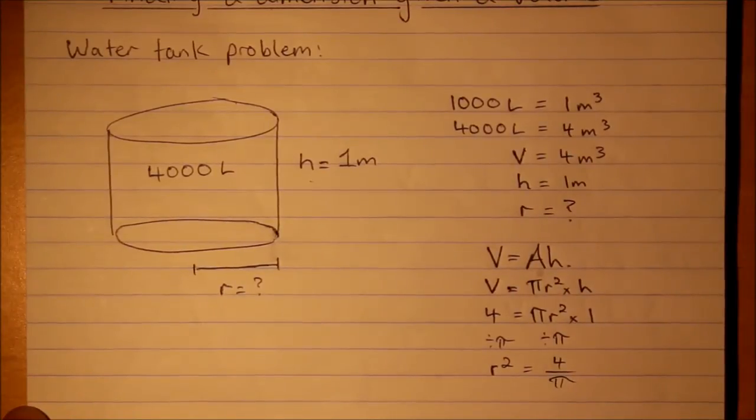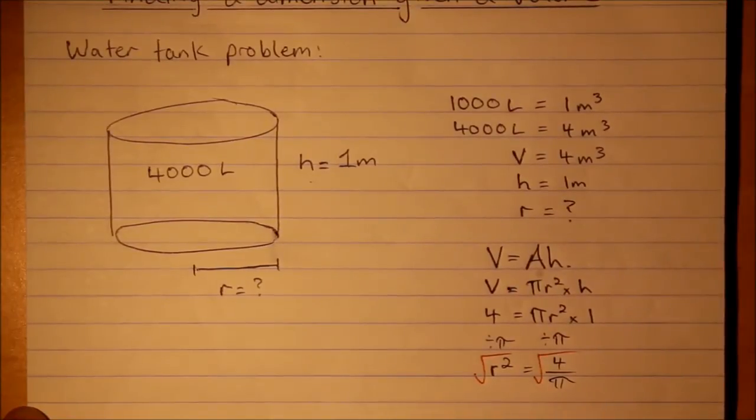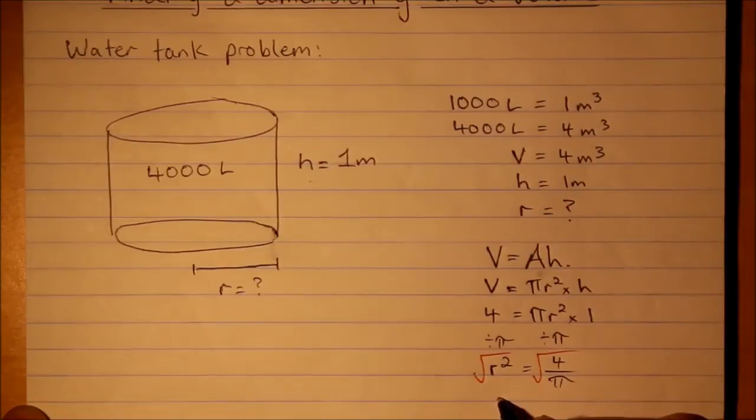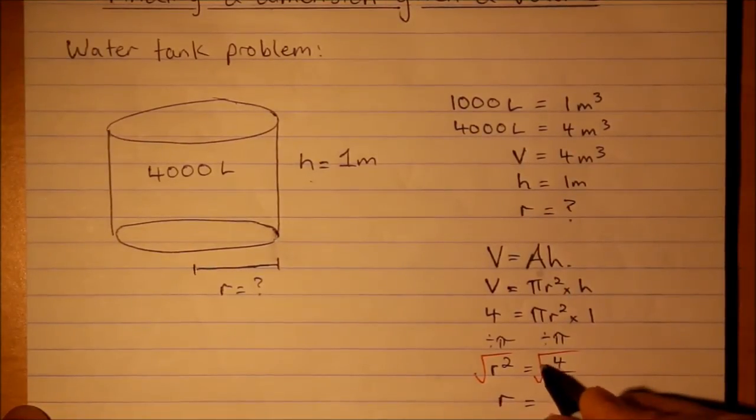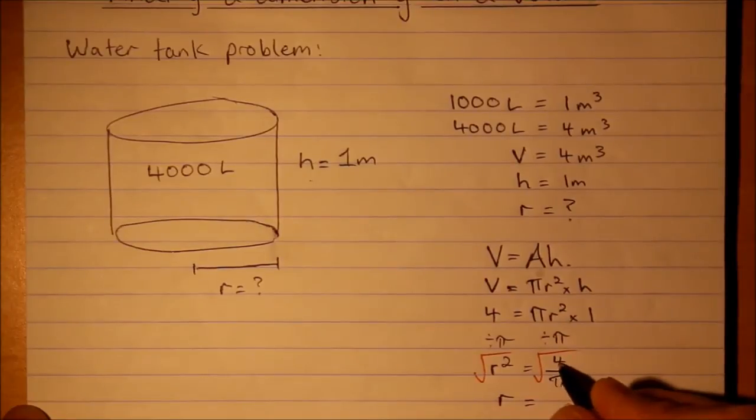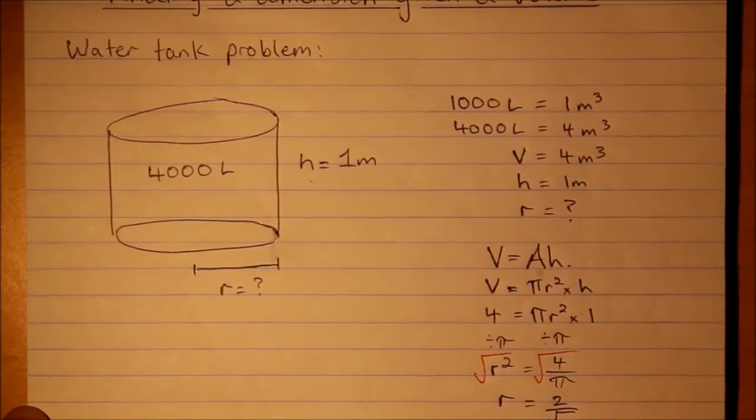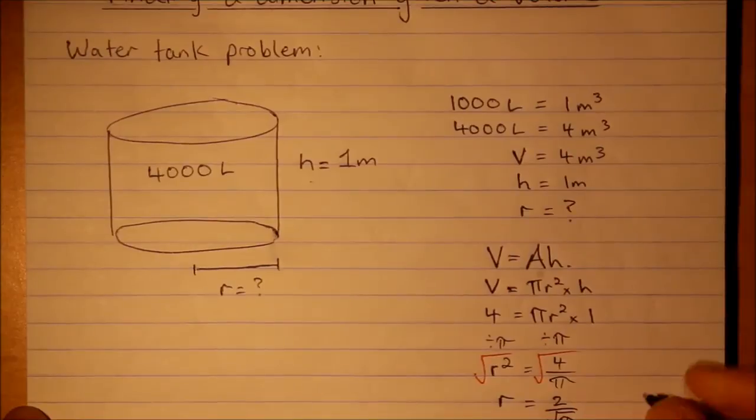Now we need r not r squared so let's square root both sides. R is going to equal, now 4 is a square number so we can make that 2. And there we have that's our exact radius.